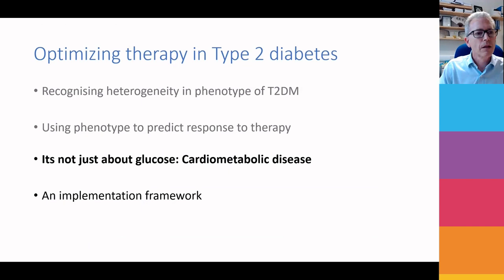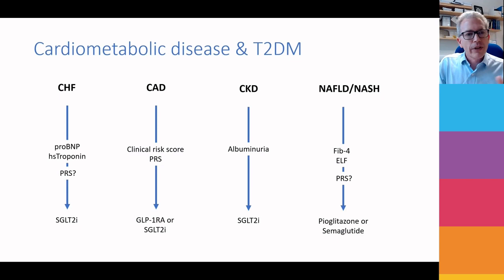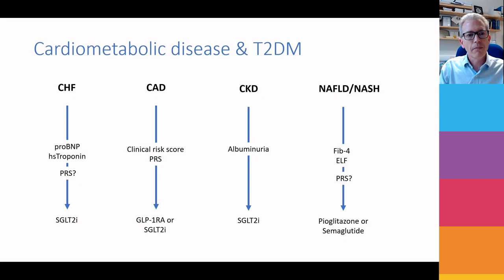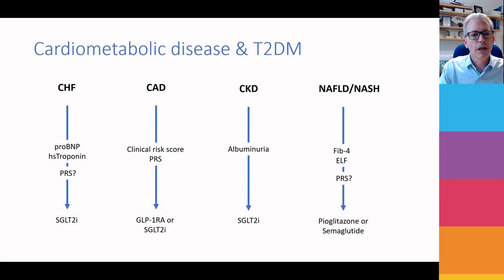Moving on — that was all around glucose, a glucocentric view of diabetes. Of course, diabetes is a cardiometabolic disease. We know now that people with heart failure should get SGLT2 inhibitors, people with coronary artery disease should get either SGLT2 inhibitors or GLP-1 receptor agonists, people with chronic kidney disease should get SGLT2 inhibitors, and there's good evidence that pioglitazone or semaglutide can reduce liver fat. We also have biomarkers — BNP, troponin, polygenic risk scores, particularly for coronary artery disease, and fibrosis markers — simple tests we can do to identify people at risk, even pre-symptomatically.